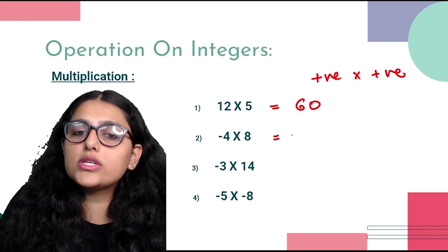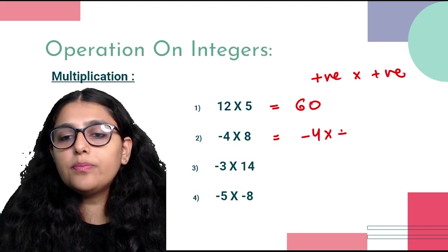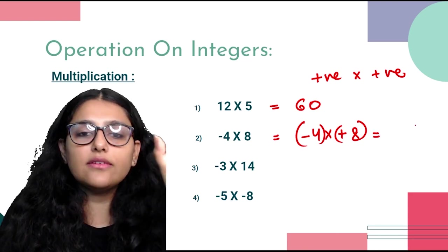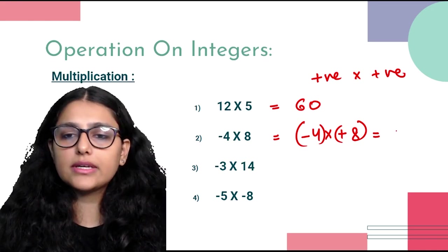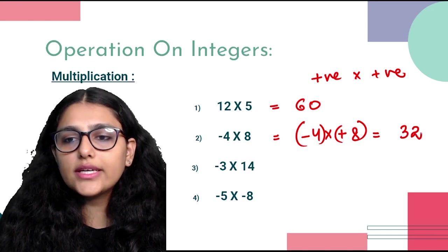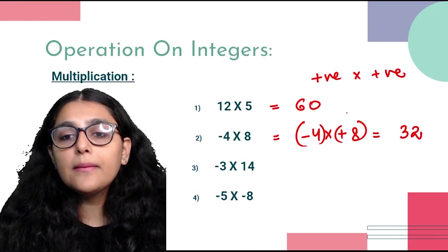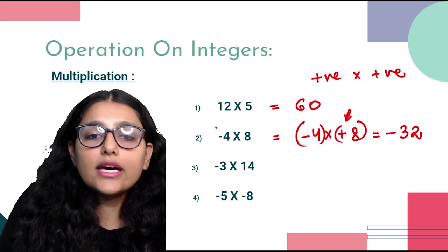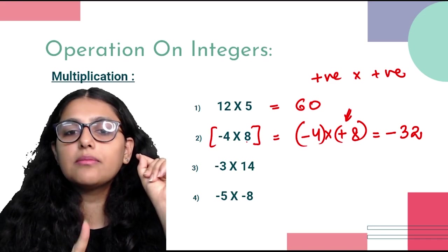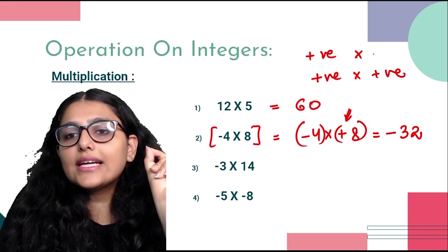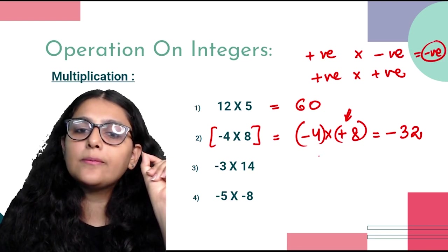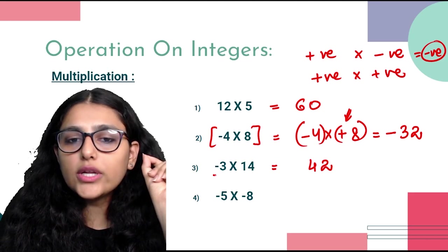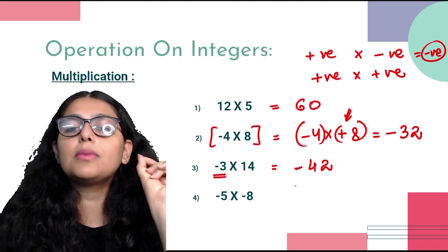Next, minus 4 × plus 8: one negative sign and one positive sign — the answer sign will be negative, regardless of which number is larger. 4 × 8 = 32, so the answer is minus 32. Then minus 3 × positive 14: one negative sign (on the smaller number — doesn't matter), answer is minus 42.